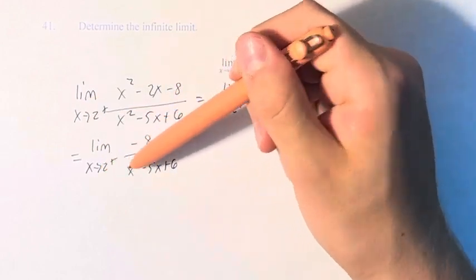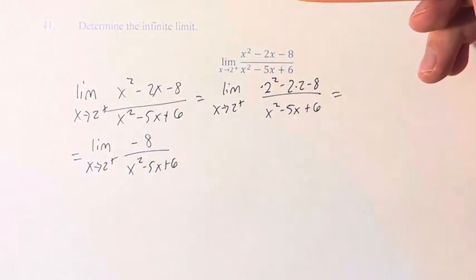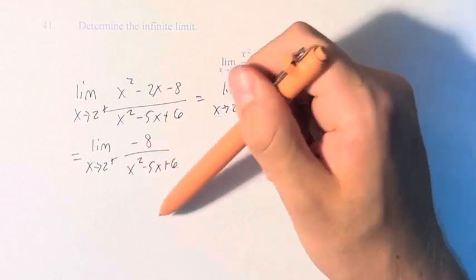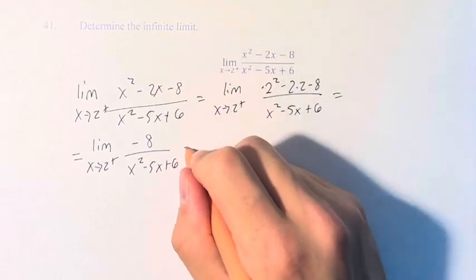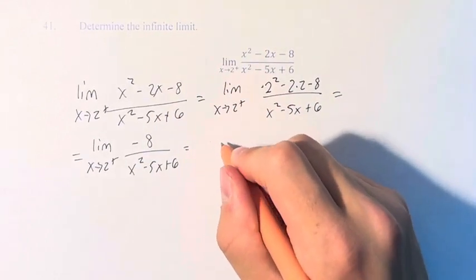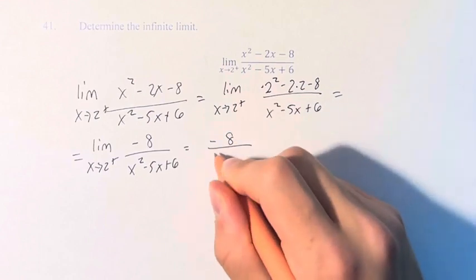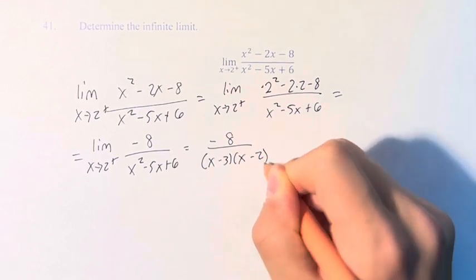Problems we plug in 2 to the denominator is that we will be dividing by 0. So we can't plug it in directly, but if we say that this is equal to negative 8 over x minus 3 times x minus 2.